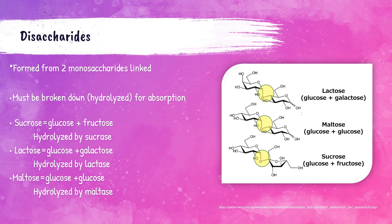When hydrolyzed by maltase, maltose breaks down into two glucose molecules. The picture on the right shows lactose, maltose, and sucrose — again for reference only; you do not need to memorize these structures. As a helpful note: anything ending in -ase, like sucrase, lactase, or maltase, means it's an enzyme. Generally the -ase is added to the root word, so maltase is the enzyme that breaks down maltose.